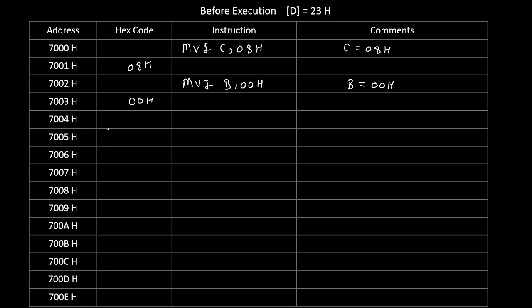At 7004H we write the next instruction: MOV A, D. This copies the value of the D register into the accumulator. Since D register was 23H, the accumulator will become 23H. We are now ready to rotate. This is a 1-byte instruction, so immediately at the next location we write RRC. RRC stands for rotate accumulator right without carry — it rotates the content of the accumulator to the right.